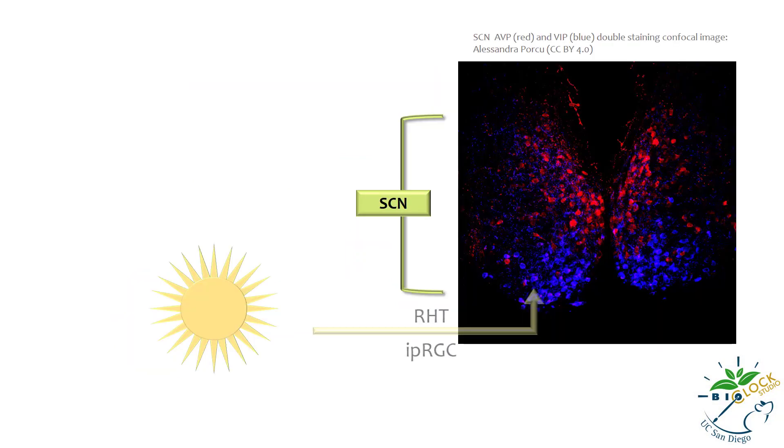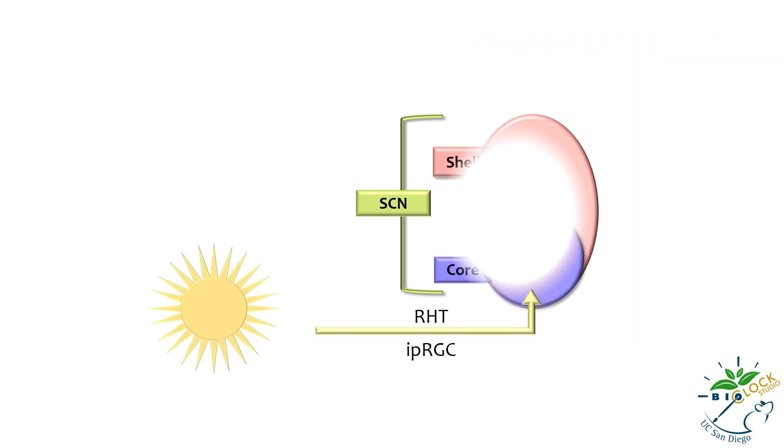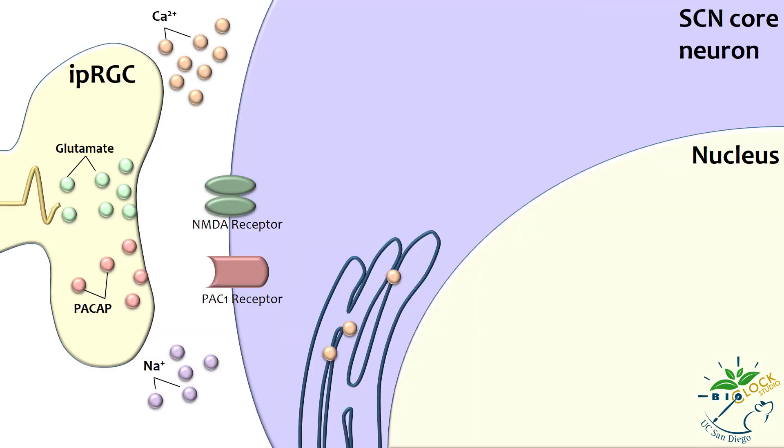Some IPRGCs terminate at SCN neurons. Only a sub-region of the SCN, called the SCN core, receives input directly from IPRGCs. Action potentials prompt the release of two neurotransmitters, glutamate and pituitary adenylate cyclase-activating polypeptide, or PACAP, onto the SCN.